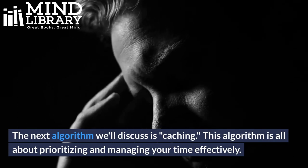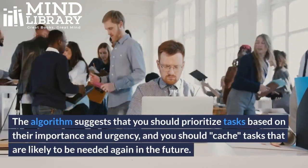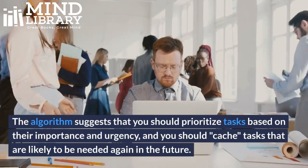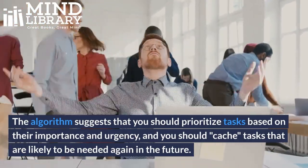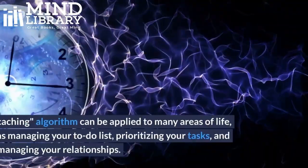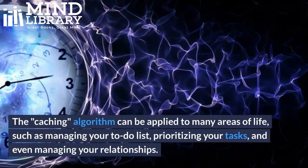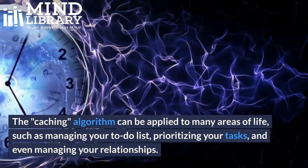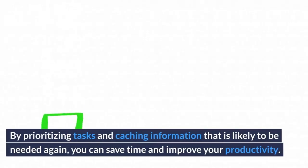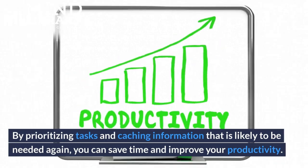Three: Caching. The next algorithm is caching, which is all about prioritizing and managing your time effectively. The algorithm suggests that you should prioritize tasks based on their importance and urgency, and cache tasks that are likely to be needed again in the future. Caching can be applied to managing your to-do list, prioritizing your tasks, and even managing your relationships. By prioritizing tasks and caching information likely to be needed again, you can save time and improve your productivity.